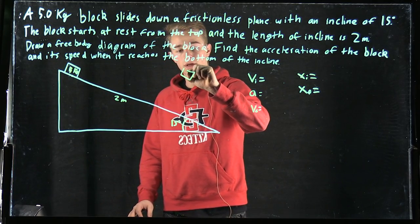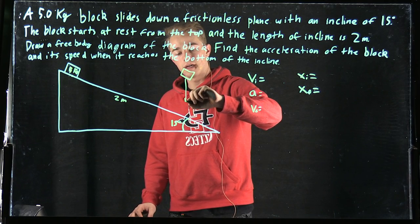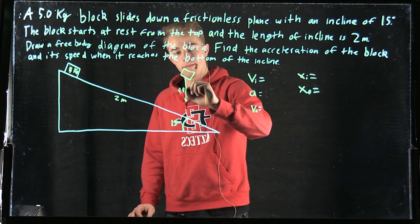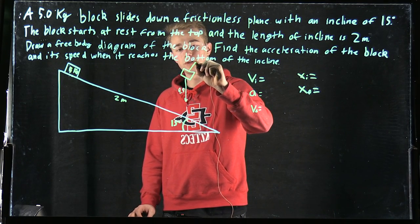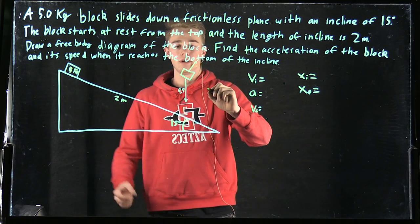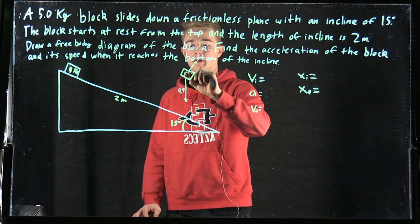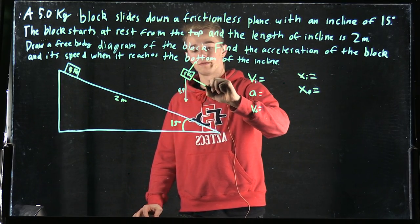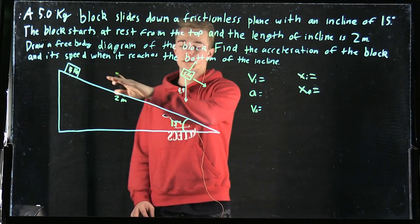You've got the block here, and then you have the force of gravity acting upon it, which is 9.8. Then you have a normal force acting back up on it from the plane, giving a resultant force headed in this direction, which is down the plane.